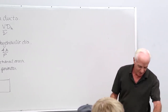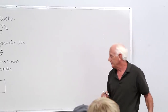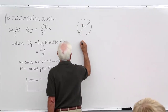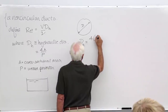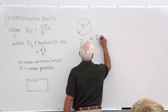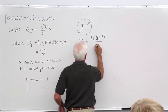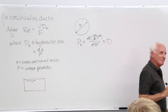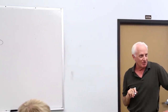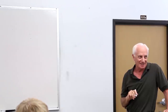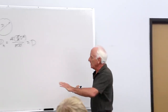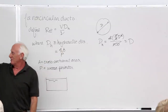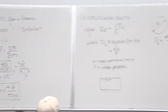Where does the factor of four come from? If you compute the hydraulic diameter for a circular duct — four times area divided by perimeter — you get four times (pi R squared) divided by (2 pi R), which equals the actual diameter D. Without the factor of four, you'd get one-fourth of the actual diameter. So the four is needed to make the hydraulic diameter correspond to the actual diameter for a circular duct.